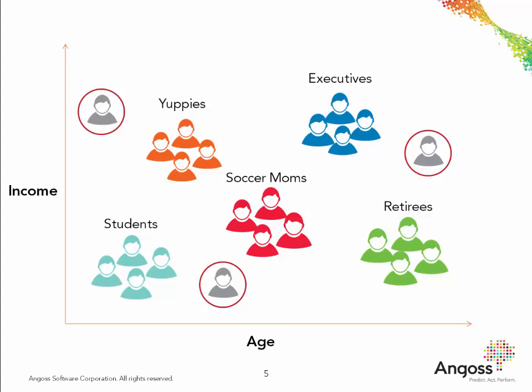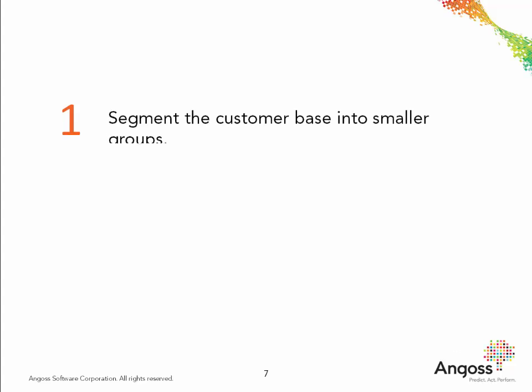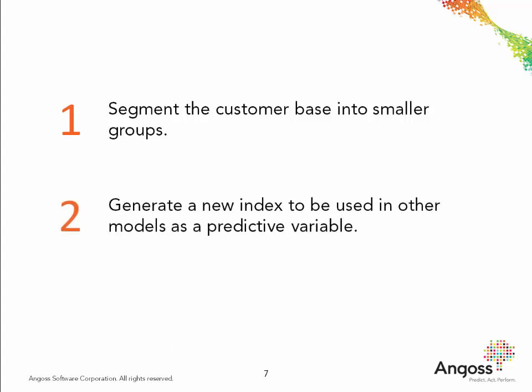These labels can be used to define products, services, or offers for each customer segment. Customer segmentation can be applied with two objectives: the first is to segment the customer base into smaller groups to help tailor services and products offered to each group, and the second is to generate a new index — for instance, a segment number or label — to be used in other models or as a predictive variable.